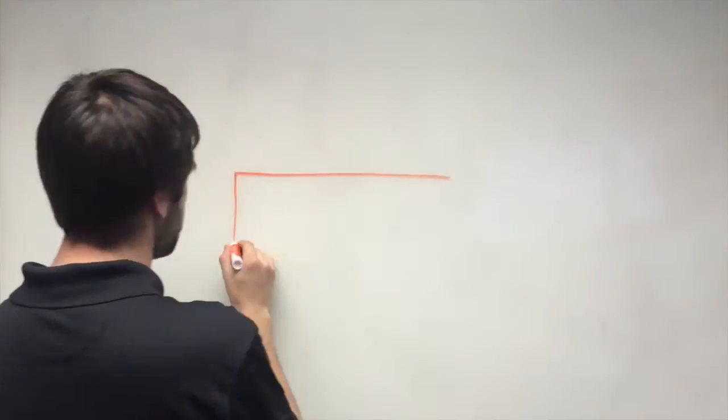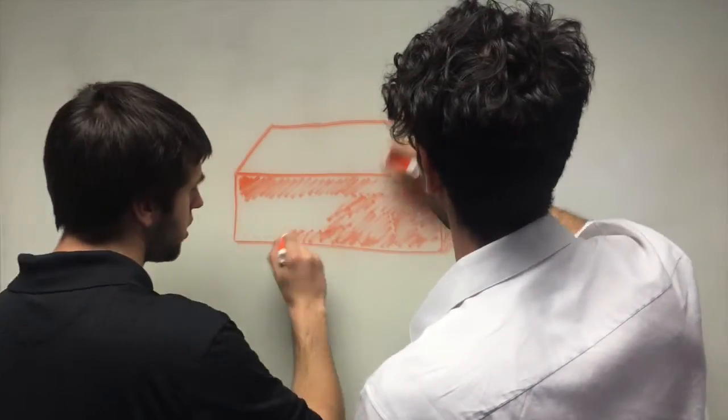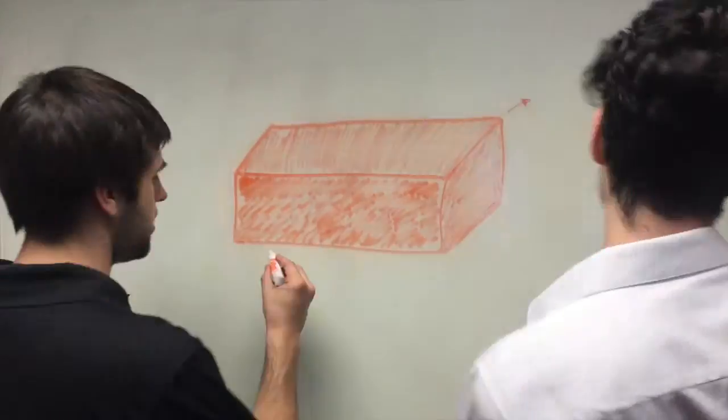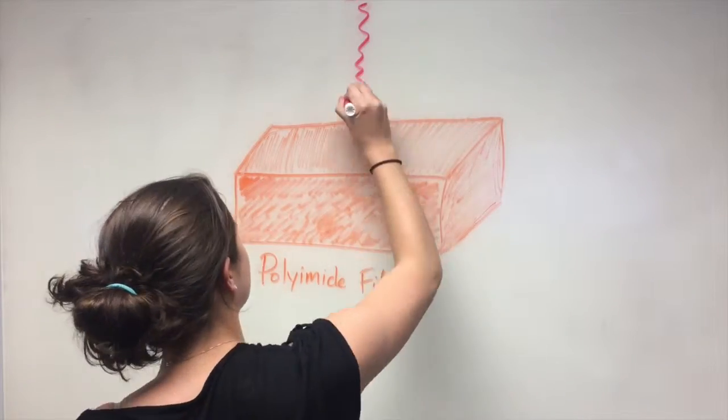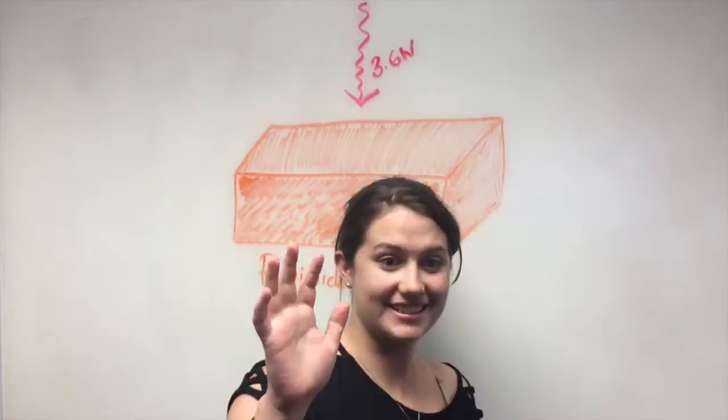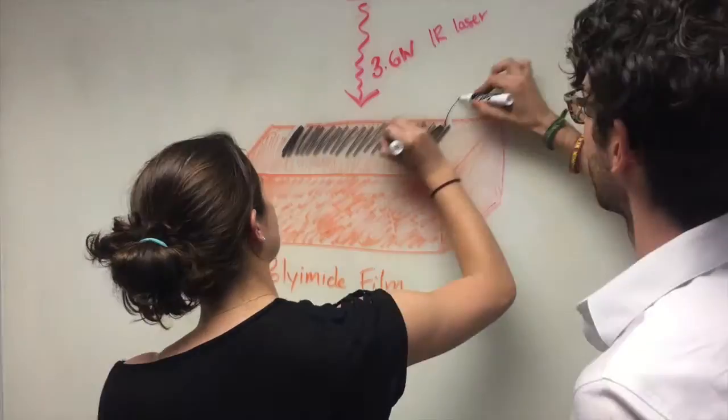In this project, we aim to design a porous graphene sponge for oil sorption. Recently, the Tour group at Rice University developed an inexpensive and scalable technique to fabricate porous graphene. Here, a sheet of commercially available polyamide film, also known as Kapton film, is radiated by an IR CO2 laser.